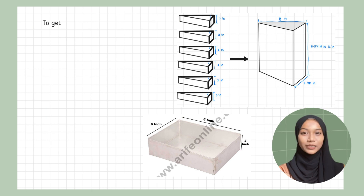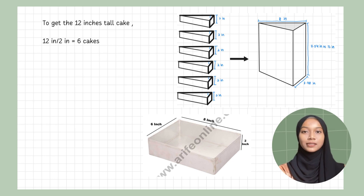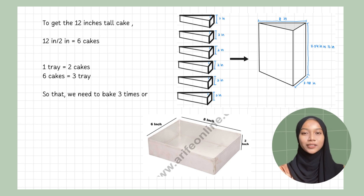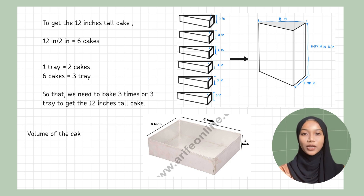To get a 12-inch tall cake, we must divide by 2 inches per layer, so we need 6 cake layers. One tray can bake 2 cakes, so 6 cakes divided by 2 means we need 3 trays. We need to bake 3 times, or 3 trays at once, to get the 12-inch tall cake. Now let's calculate the new volume of the cake without icing: one-half times 8 times 12 times 3.48 equals 167.04 cubic inches.